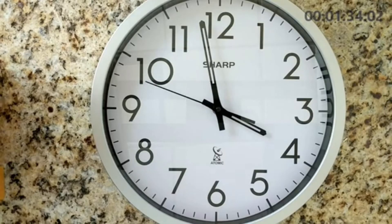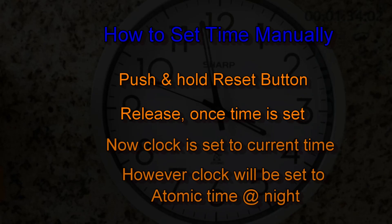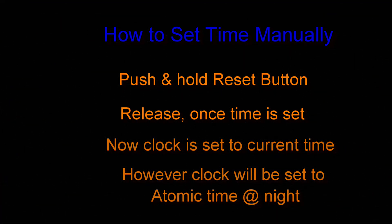How to set the time manually? In order to set the time, simply push and hold the reset button on the back. You will see the clock hands start to move. Once your clock hands reach the correct time, release the reset button.